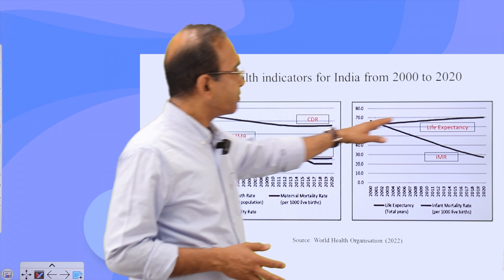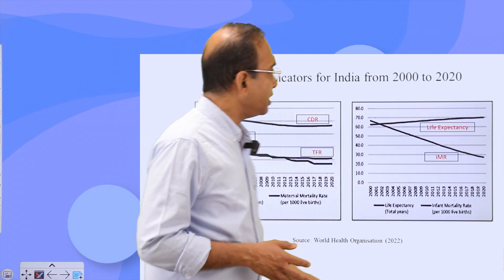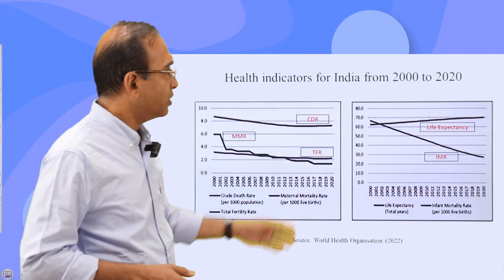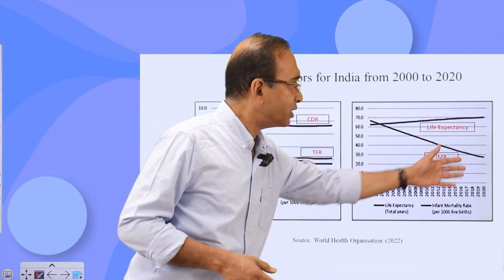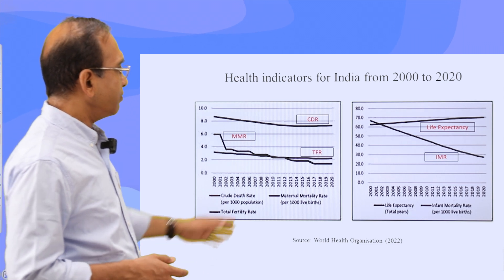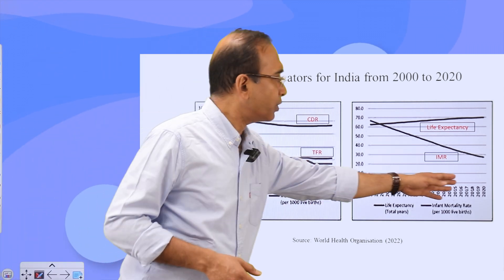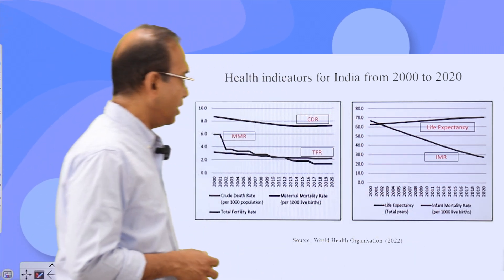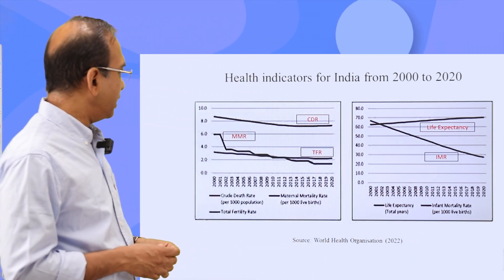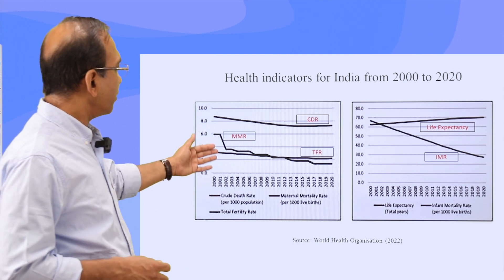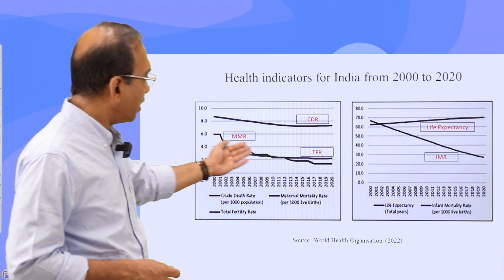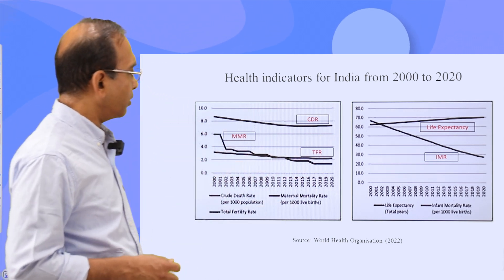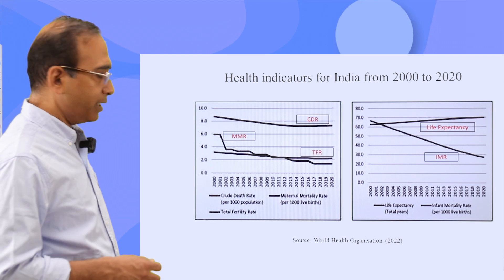You can see that life expectancy has increased. Mortality rate has gone down substantially — from 2000 to 2020, it is a real success for India's health sector. Total fertility rate is slowing down, and maternal mortality rate is also slowing down.